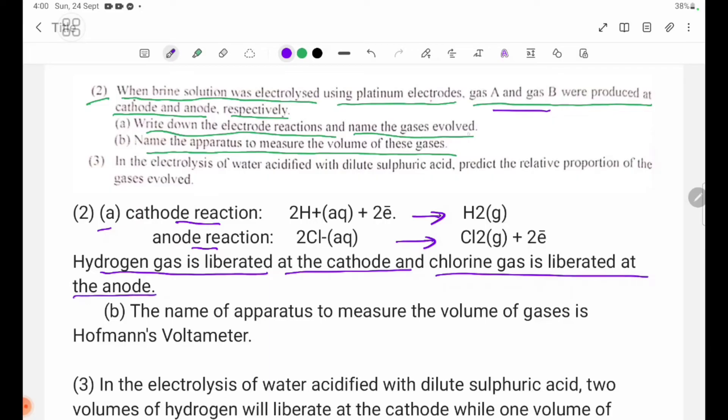Part B. The name of apparatus to measure the volume of gases is Hoffmann's voltmeter.